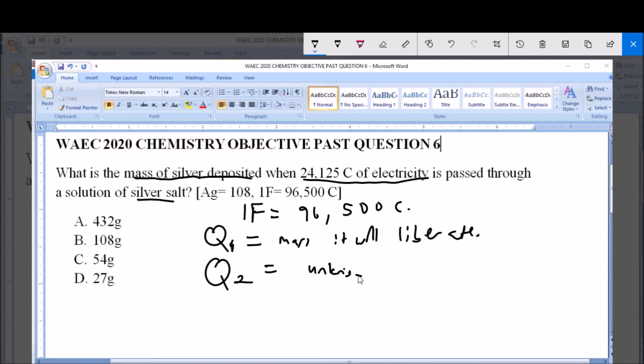So as it stands, we have the standard procedure. We have the standard liberation. That is 1 Faraday, 96,500 coulombs, which is Q1, liberating 108 grams of silver as the standard. And you are also given a second quantity, which is 24,125 coulombs.